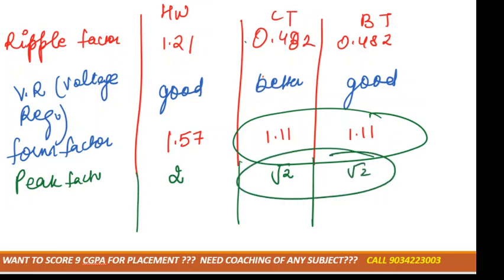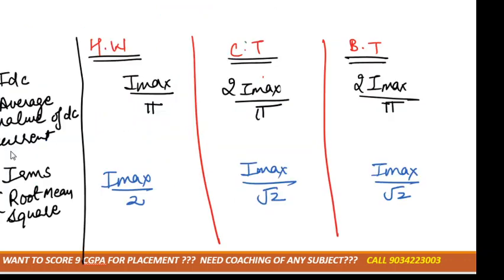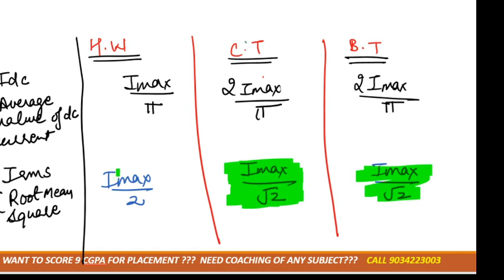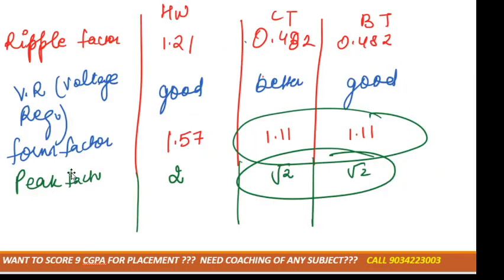The reason for the change in the half wave rectifier values is that IRMS in normal cases is Imax by root 2, but in the case of half wave rectifier it is Imax by 2. That is why the form factor and peak factor values change for half wave.